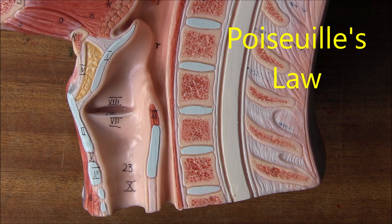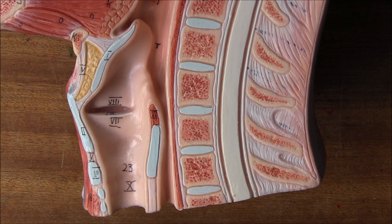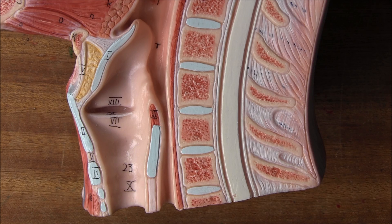This is an important consideration whenever we're thinking about children's airway, because resistance to flow in the airway is governed by Poiseuille's law. This means if the radius of an airway is halved, the resistance to flow will increase by a factor of 16 — so any narrowing of any part of the airway is significant in children.